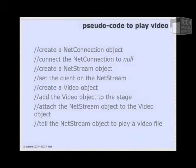Let's pseudocode out what we need to do in order to play a video in ActionScript 3. Pseudocode just means writing in English what we need to write in code. First, we're going to need to create a NetConnection, and then connect that NetConnection to null. Whenever you create a NetConnection, you have to tell it where to connect to. When playing progressive video off of the same server that the SWF is being delivered from, which is the vast majority of cases, you connect the NetConnection to null.